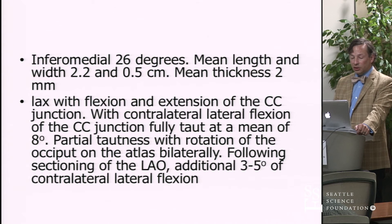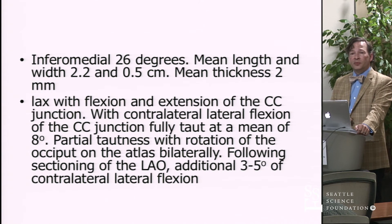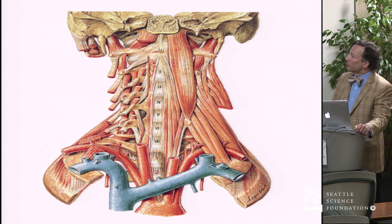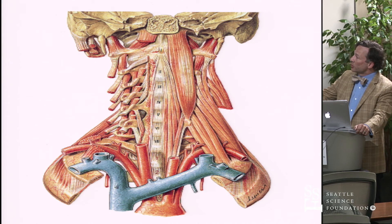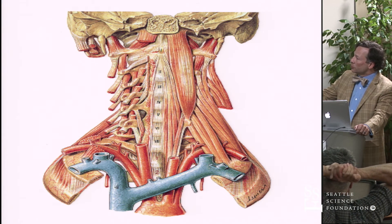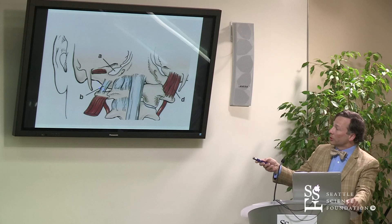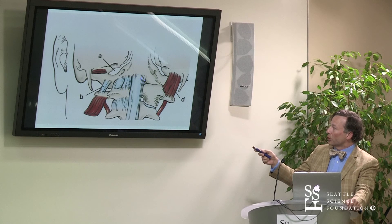Its thickness is fairly little — about 2 millimeters. We see that with flexion it was lax, and with extension the same. However, with contralateral lateral flexion of the cranial cervical junction, it became taut at about 8 degrees. Just to show you how difficult it is to get to that area — this is a coronal section at the level of the styloid process and transverse process of C1. We see the rectus capitis lateralis and rectus capitis anterior. That ligament, if we take down the muscle, is just behind it, a small structure. For reference we see the capsular ligaments between C1 and occiput and then the anterior longitudinal ligament.